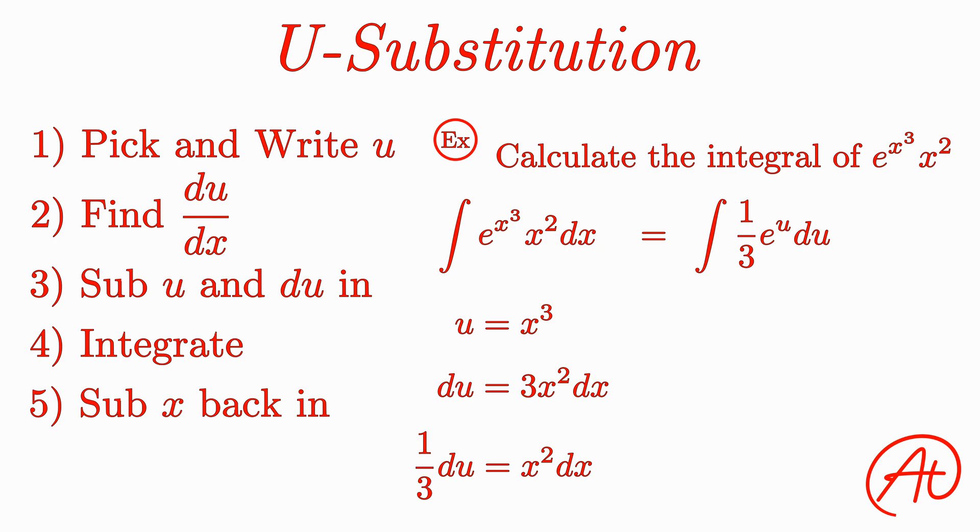We know constants like 1 third are just along for the ride in integrals, and the antiderivative of e raised to u or x or any variable is just the same thing, so we find that our overall integral is 1 third times e raised to the u plus c. Then our last step is to plug all the x's back in for the u's, which leaves us with our final answer of 1 third times e raised to the x cubed plus c.